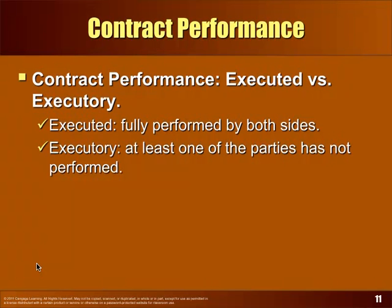Executed versus executory: executed means all sides have done everything they're supposed to — there's nothing left to be done. An executory contract is when at least one party has at least one thing left to do. For example, paying off a vehicle — at the end, it was still executory because the other side still had to give me a clear title.